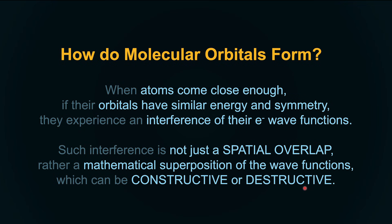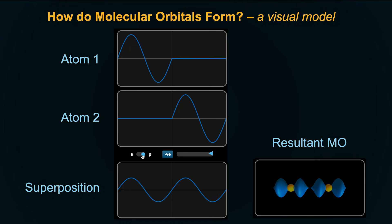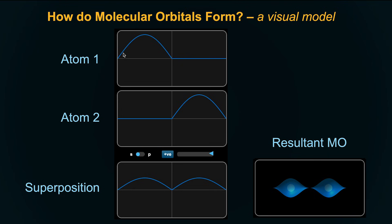Here's a quick visualization. Think of a sine wave — half a sine wave represents an S orbital. If atom 1 has one half of a sine wave and atom 2 also has one half of a sine wave, when they come close we can see the addition of the electronic distributions around those nuclei — a nucleus with an electron cloud around it.